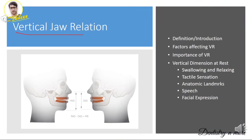Vertical jaw relation is a very broad question. You must write about vertical jaw relation at rest, vertical jaw relation at occlusion, and the effects of increasing or decreasing the vertical jaw relation. Include the definition, factors affecting it, its importance, and how to obtain vertical dimension at rest. Most commonly we use speech or phonetics — asking the patient to say 'M' or 'S' sounds — which brings the mandible into physiological rest position.